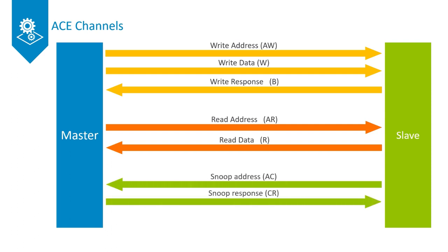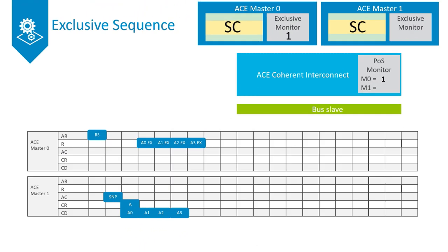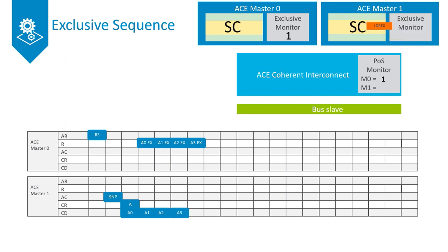Several transaction flow examples are shown for shareable reads and writes, as well as what happens if you get two transactions to the same line at the same time. The course also covers how exclusive accesses are used in read, modify, and write sequences by the use of ACE's exclusive transactions, which guarantee that a memory location will only get updated if no other master has modified it.